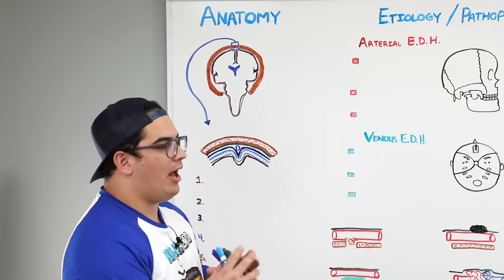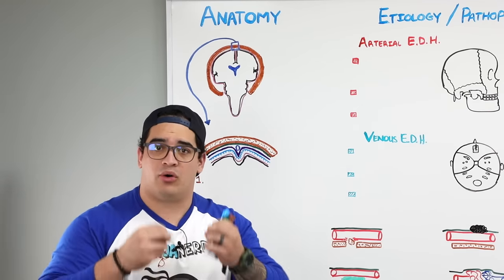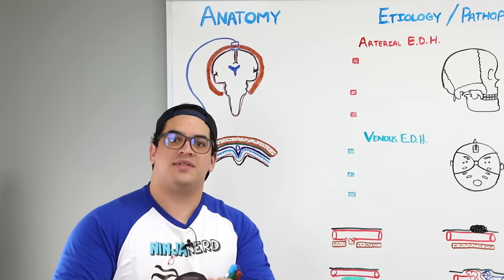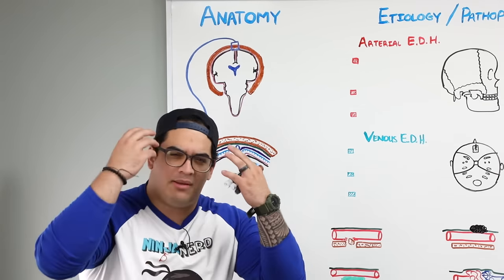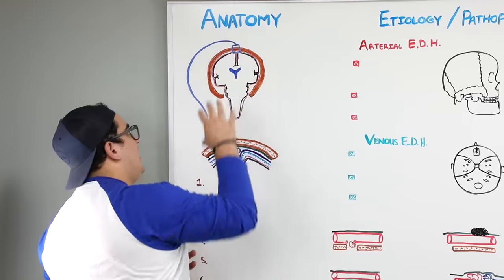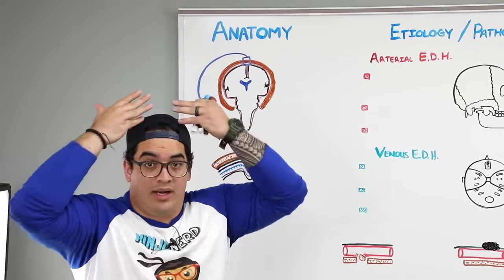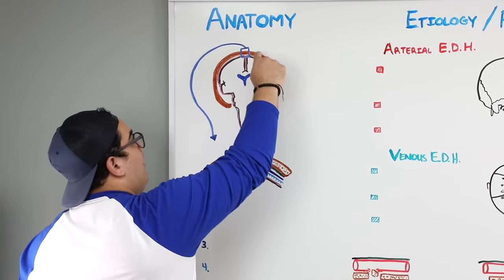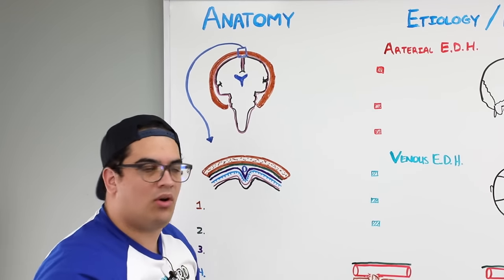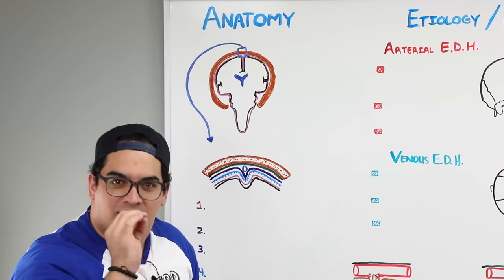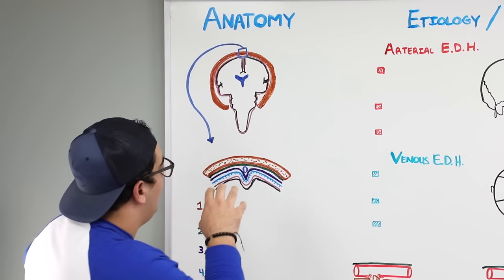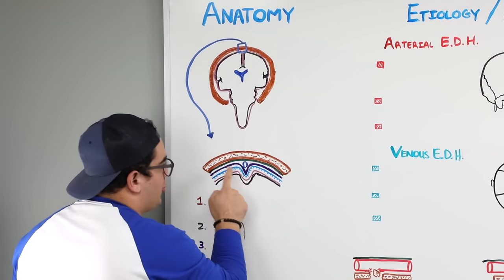When we talk about epidural hematoma, we know that it's basically a hematoma or a bleed that accumulates within the epidural space. That deserves some discussion on the anatomy of the meninges, brain tissue, and parenchyma. So let's take a coronal section, looking from the front view, with the skull, the brain parenchyma, and some meninges between the brain parenchyma and the skull. We want to zoom into that at a microscopic or tissue level.